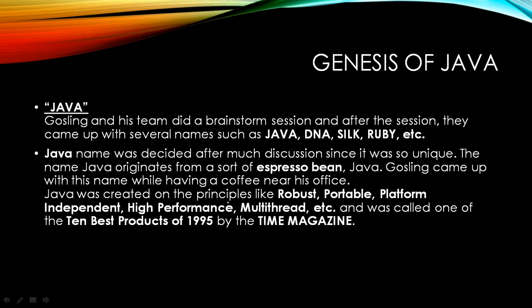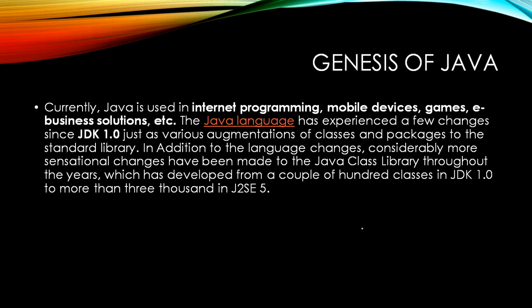Java was created on the principles of being robust, portable, and platform-independent, high performance, multi-threaded, etc. It was called one of the best products of 1995 by Time magazine. Currently Java is used in internet programming, mobile devices, games, electronic business solutions, and more.